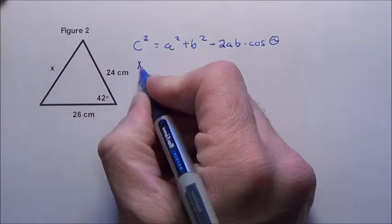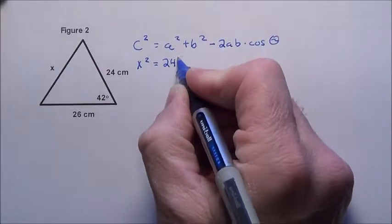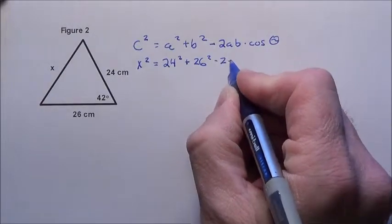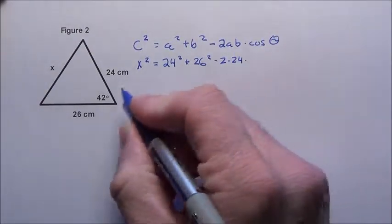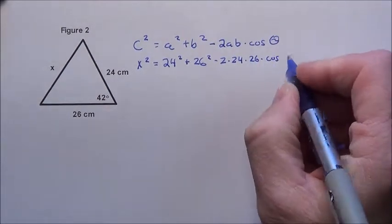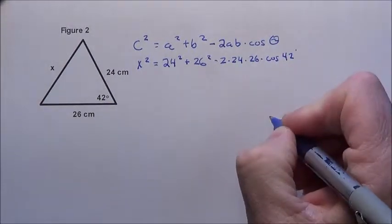So that x right there, that x², is equal to the one leg—we'll just use 24 there. The other leg, we'll use 26, minus 2 times the one leg times the other leg, which we said was 26, times the cosine of theta. Well, theta is just that angle right there, 42 degrees.